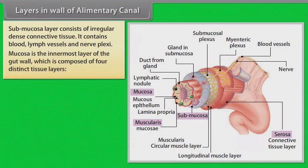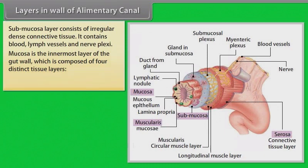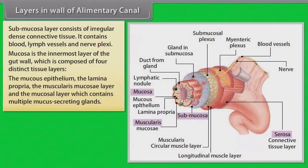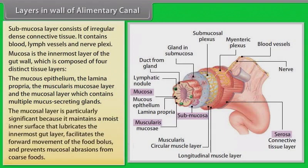The mucosa is the innermost layer of the gut wall, composed of four distinct tissue layers: the mucous epithelium, the lamina propria, the muscularis mucosae, and the mucosal layer containing multiple mucous-secreting glands. The mucosal layer is particularly significant because it maintains a moist inner surface that lubricates the gut, facilitates the forward movement of the food bolus, and prevents mucosal abrasions from coarse foods.